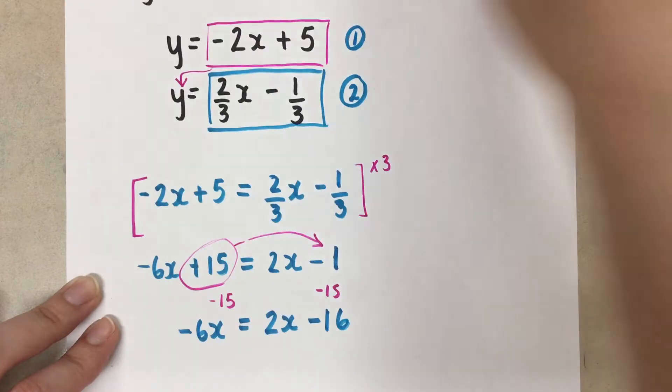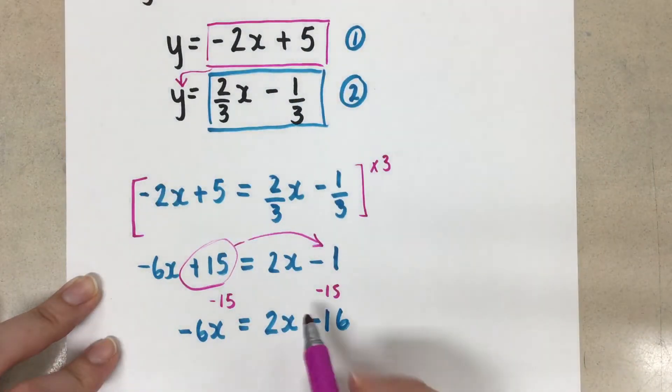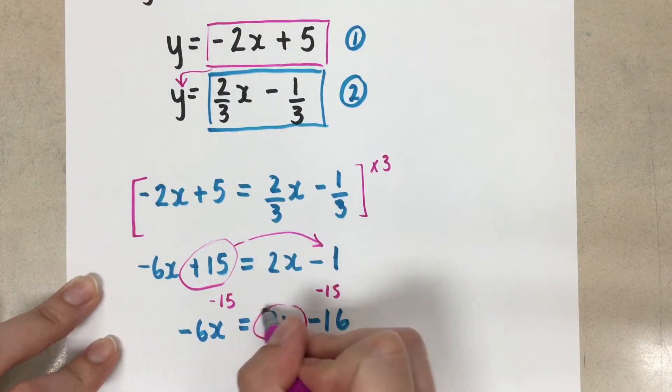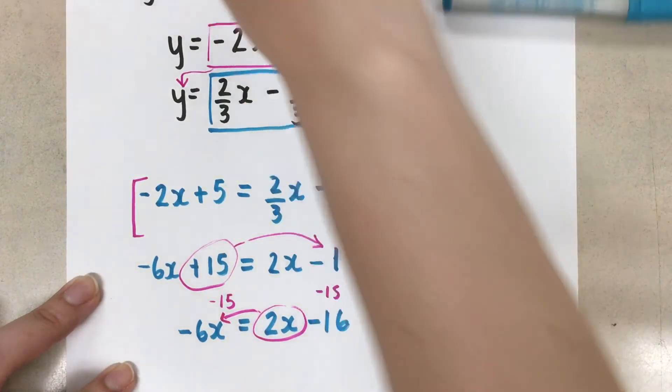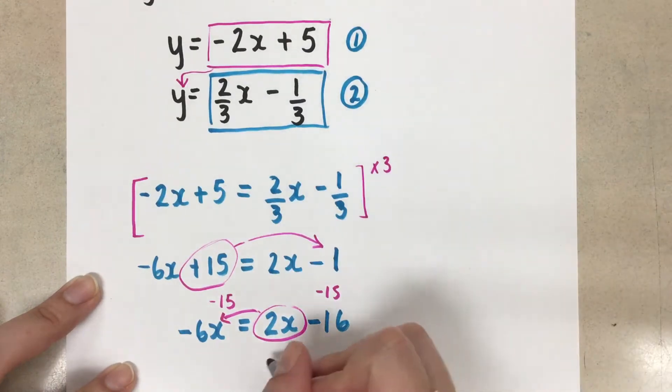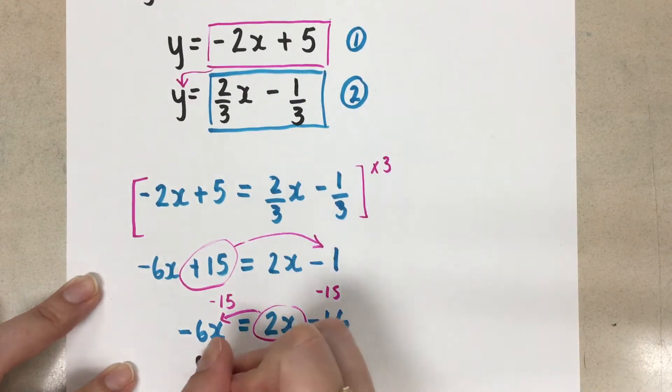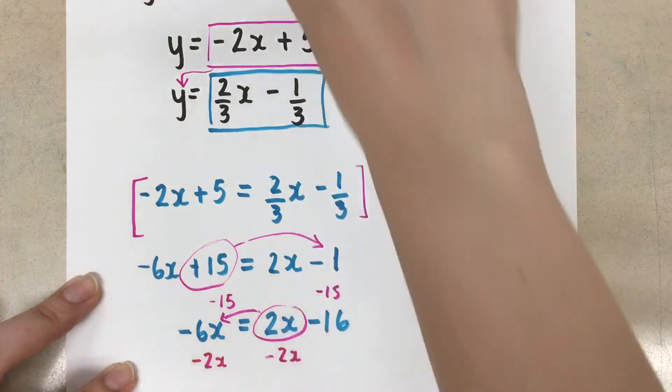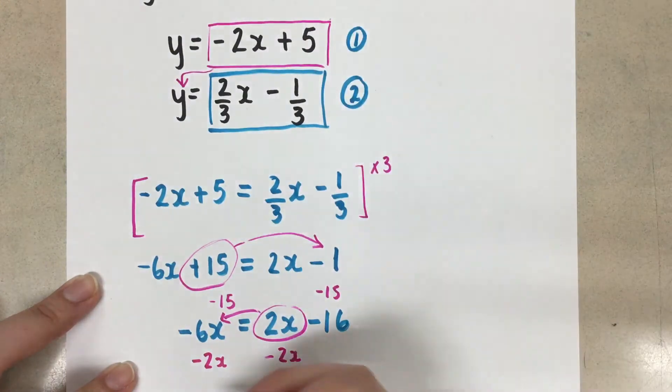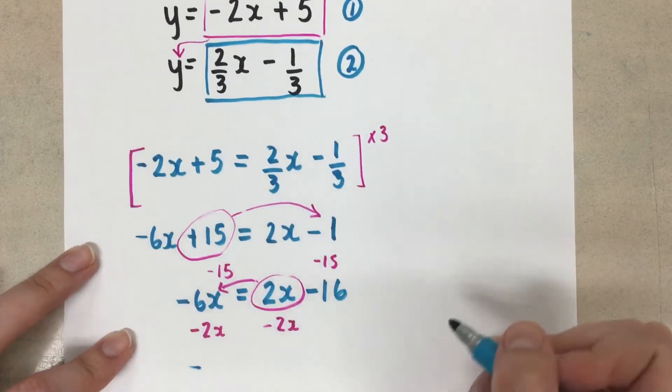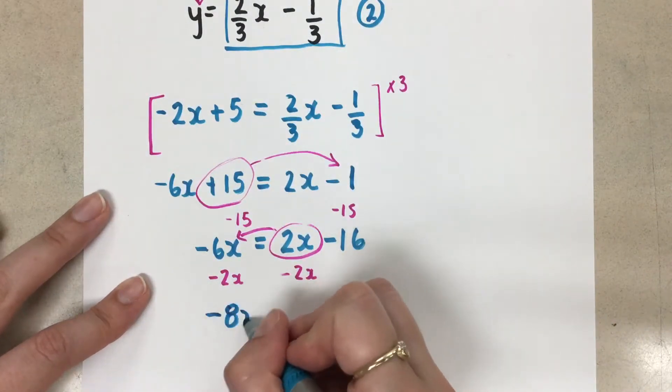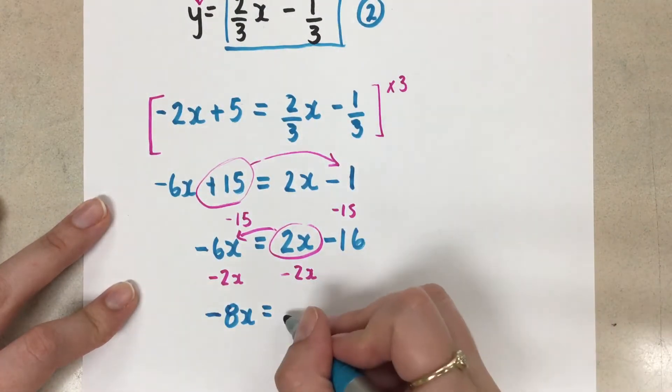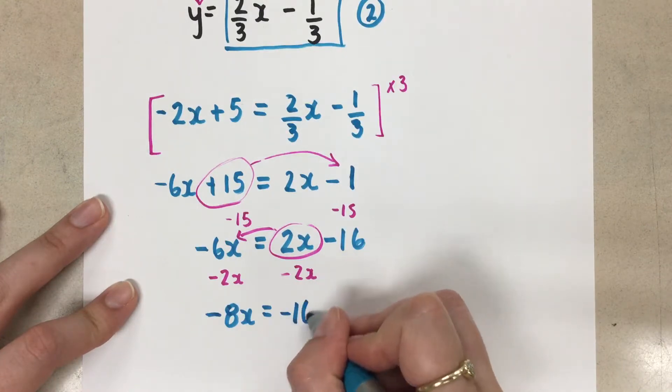And that leaves us with negative 6x equals 2x minus 16. And now we'll do the same with the x term. So we want this term to move over here. So we'll do minus 2x to move it over. And now this gives us negative 8x.